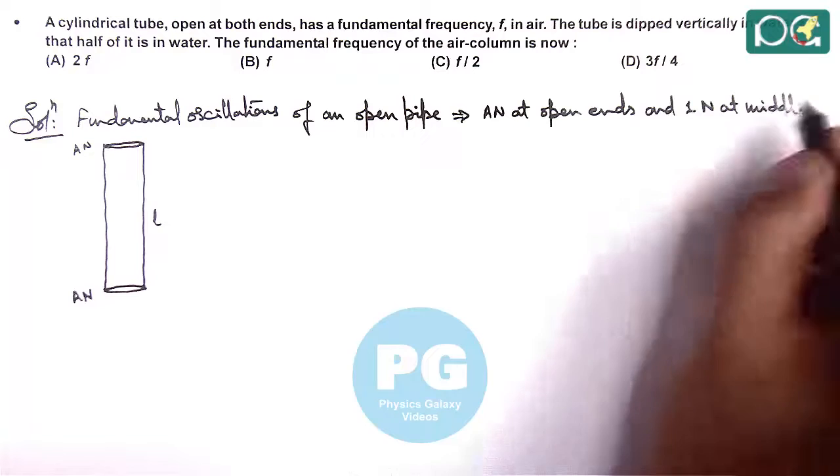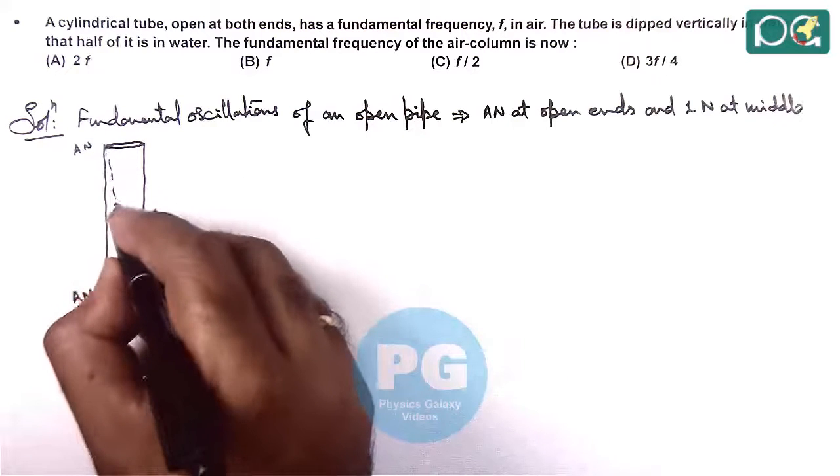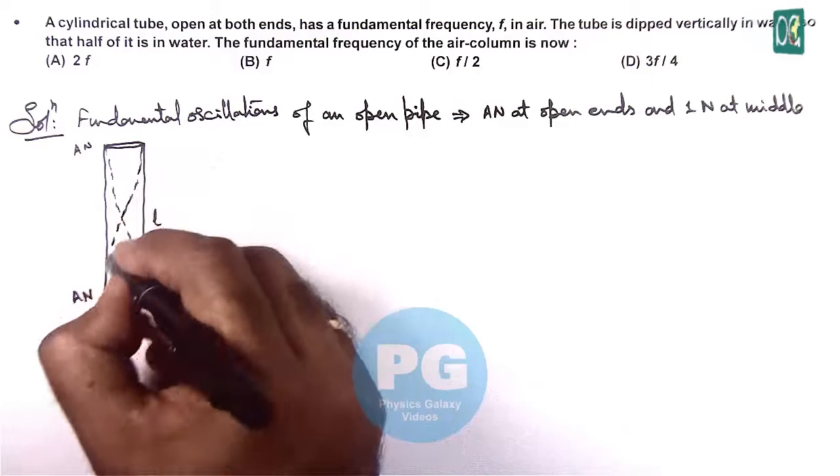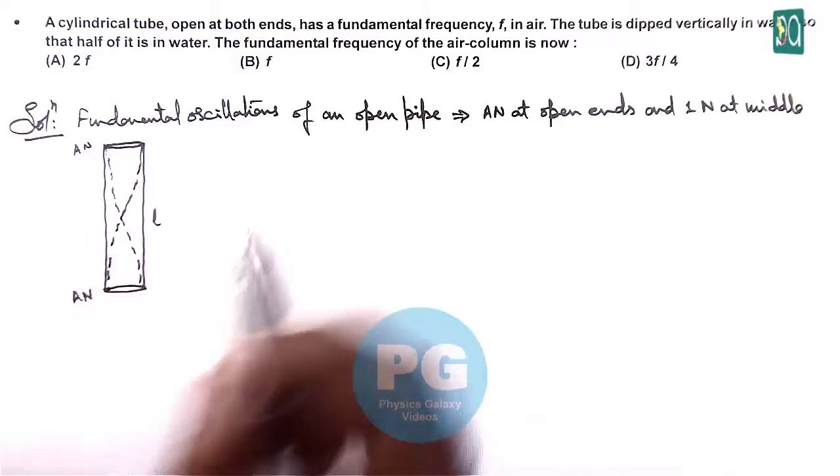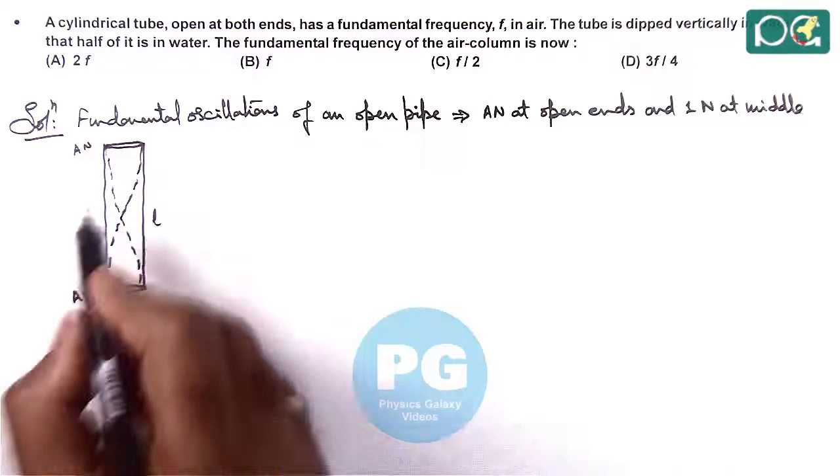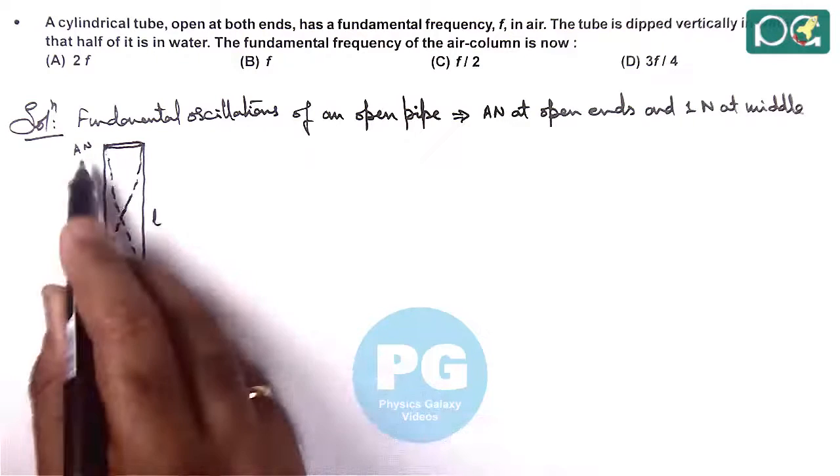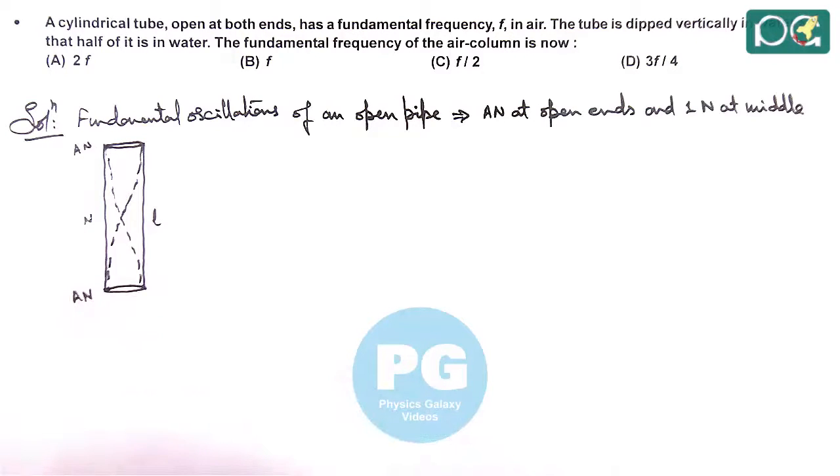This is what we already discussed in theory, the case is like this. Here we are drawing the displacement nodes and anti-nodes, so there is one node at the middle and two anti-nodes at the open ends.